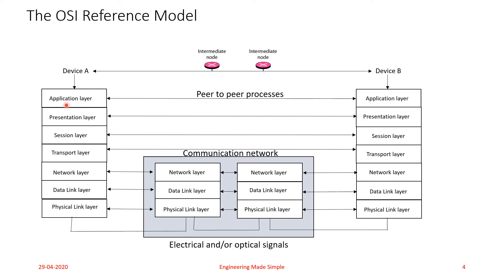In Device A, the data moves from the Application layer down to the Physical layer. From the Physical layer of Device A, it passes to the intermediate nodes and reaches the Physical layer of Device B. From there, the same data packet is transmitted upward to the Data Link layer, then Network layer, Transport layer, Session layer, Presentation layer, and Application layer.